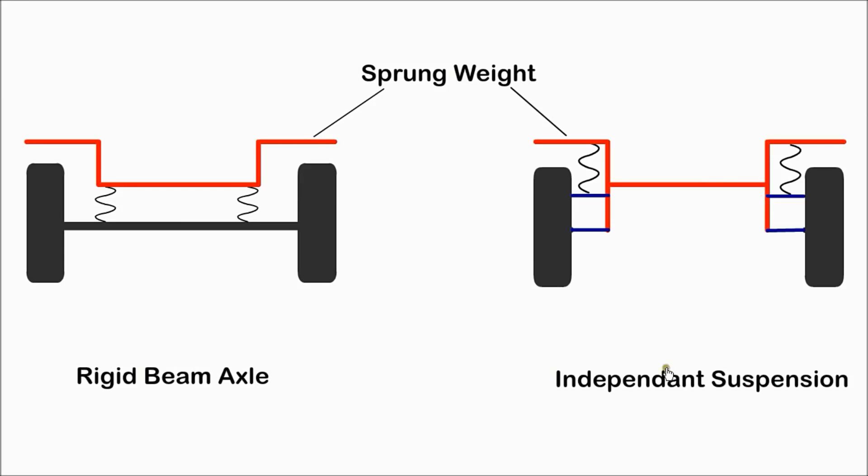Unsprung mass or unsprung weight is the mass of suspension components attached to the wheels. Ideally, the unsprung mass should be as small as possible compared to the sprung vehicle mass.